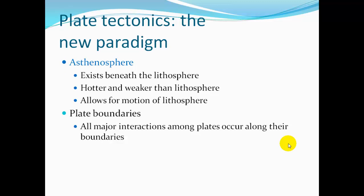The asthenosphere is underneath the lithosphere. It's hotter and weaker than the lithosphere, so it allows for motion. Under the heavy pressure and heat, the rock of the lithosphere becomes more plastic, allowing it to flow a bit, which in turn allows the stiffer lithosphere on top — those plates — to move.